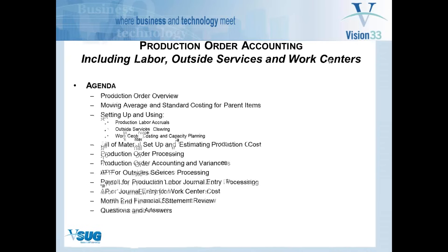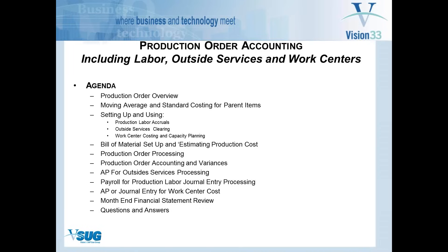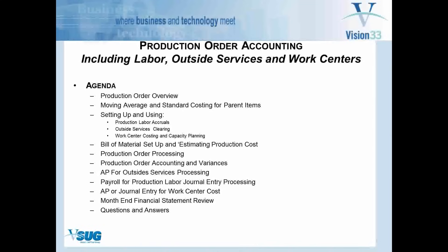Depending on your costing method, it will take the cost of all the components — if the father item is moving average, push that into the cost of the father item. If you're using standard, there are more variances. There are three costing methods in SAP: FIFO, moving average, and standard. FIFO is very difficult to review in a one-hour format because everything is sort of hidden from you, so today I'm going to stick with moving average and standard cost.